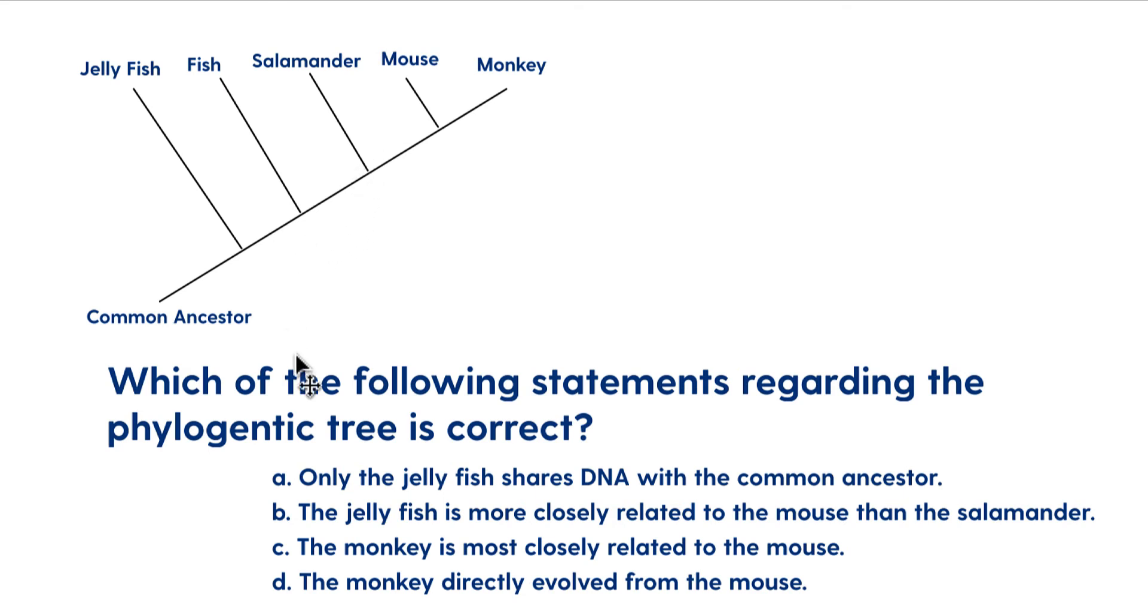So let's look at the questions down here. Which of the following statements regarding the phylogeny tree is correct? So A says that only the jellyfish shares DNA with the common ancestor. Hopefully you realize all of these organisms are going to have DNA and they all probably share a significant amount of DNA. And so we don't know the common ancestor, maybe we're talking about something that no longer exists, bacteria, or we don't really know and it doesn't really matter. The point being that there is going to be consistency from all of these organisms. So A is going to be wrong.